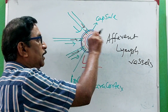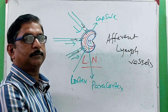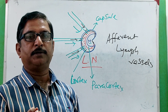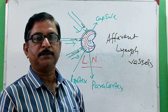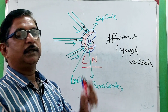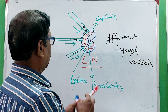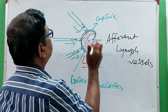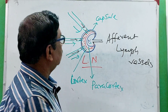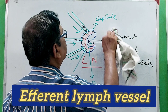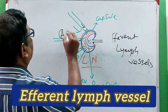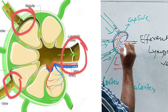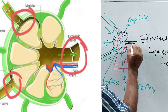The afferent vessels are multiple for a particular lymph node, and every afferent lymph vessel has valves so that lymph flows only into the lymph node in one direction. When the lymph passes through the lymph node, it is filtered here. Bacteria, microbes, dust particles, and debris passing through the lymph are all filtered in the lymph node. After filtration, the lymph vessels come out through the medulla — these are called efferent lymph vessels. The efferent vessels also have valves so lymph flows in only one direction.